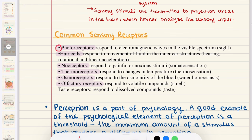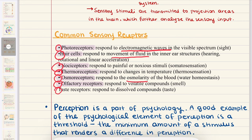The sensory receptors to know are: photoreceptors, which respond to electromagnetic waves in the visible spectrum; hair cells, which respond to movement of fluid in the inner ear; nociceptors, which respond to painful or noxious stimuli; thermoreceptors, which respond to changes in temperature; osmoreceptors, which respond to osmolarity of the blood; olfactory receptors, which respond to volatile compounds; and taste receptors, which respond to dissolved compounds.